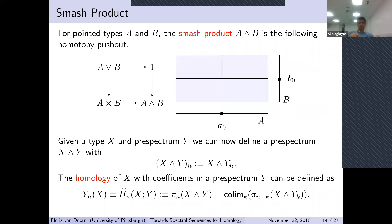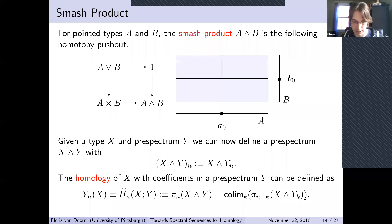The colimit here is a higher inductive type, which can be written down with point and path constructors. It is a special case that can be defined using homotopy pushouts or quotients.